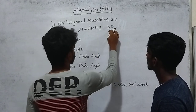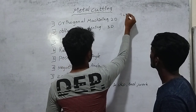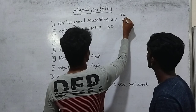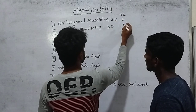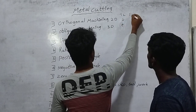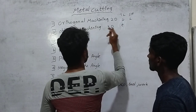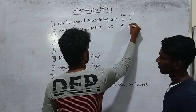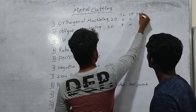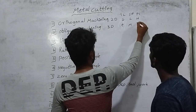In the orthogonal machining, the tool life is less. In the oblique machining, the tool life is more. In surface finish, the orthogonal machining gives less finish. In the oblique machining, it is more. The power consumption is high in orthogonal machining; in the oblique machining, it is lower.